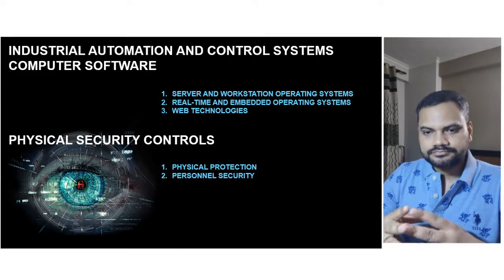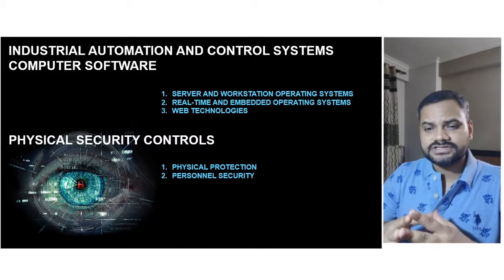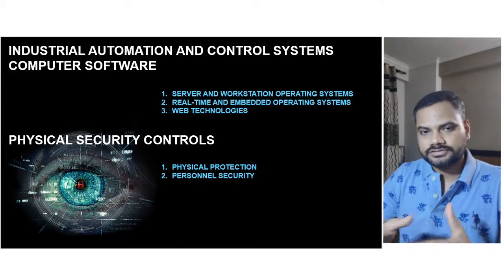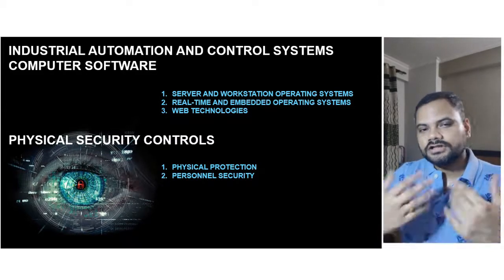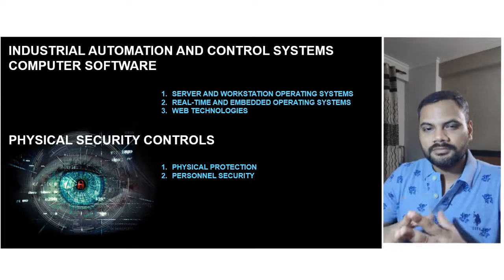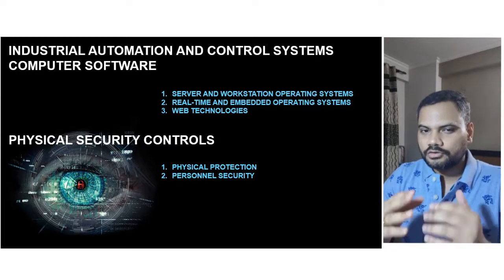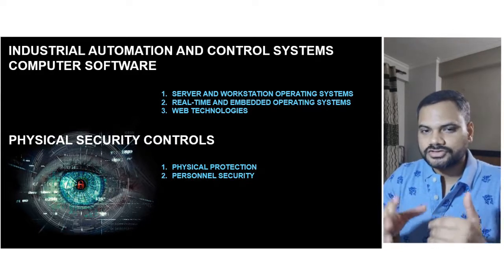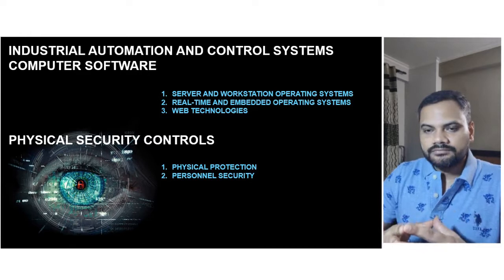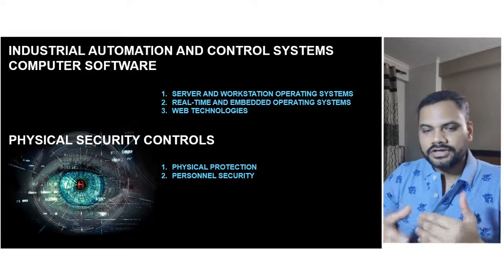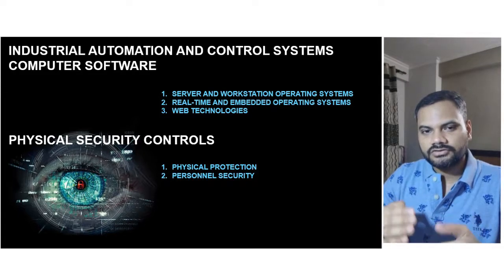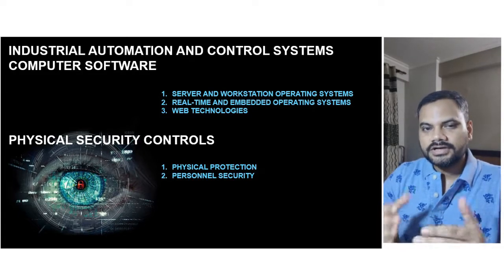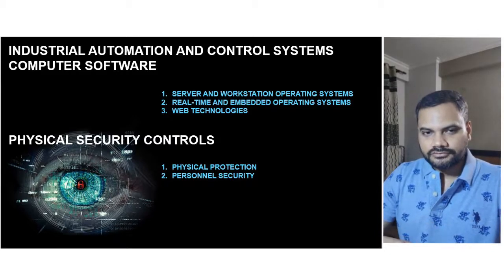Finally, the standard provides guidelines about physical security controls — physical protection of the ICS environment and personnel security. All of these recommendations are included in IEC 62443-3.1, and we can go through each chapter and section in detail in our next videos. Thank you for now.